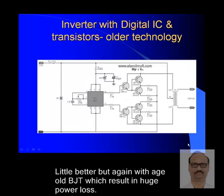Inverter with digital IC and transistors is still an older technology — slightly better, but still using old BJT transistors, which result in huge power losses. Series resistors are needed for current balancing, unlike MOSFETs which can be connected directly in parallel. Transistors cannot be directly paralleled, so there is always a large power loss both across the transistors and across the series resistors.